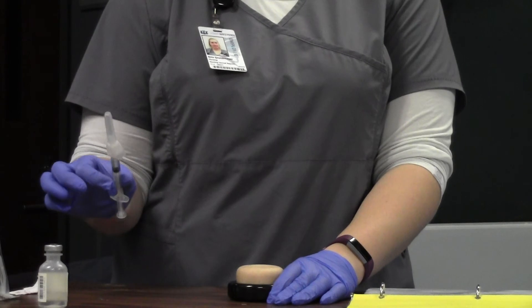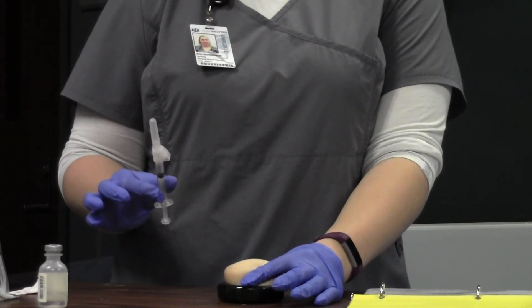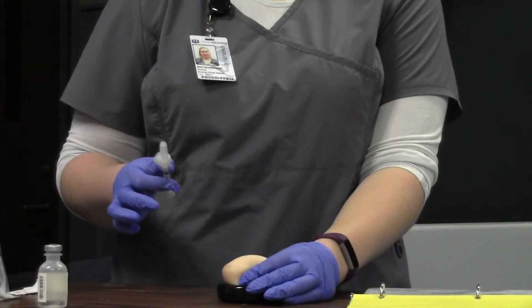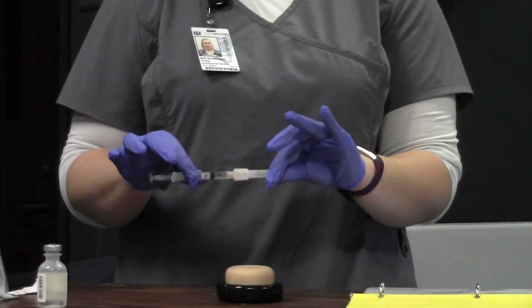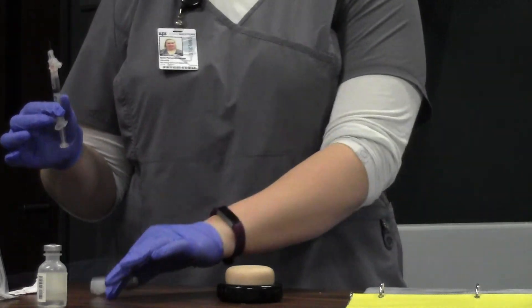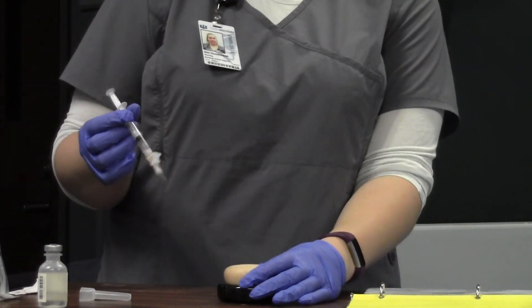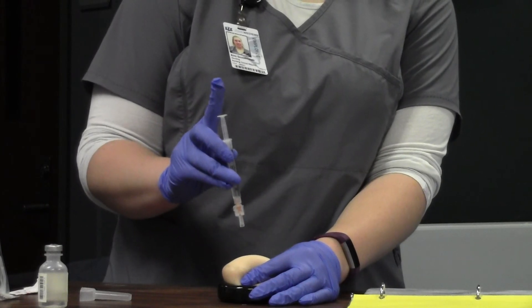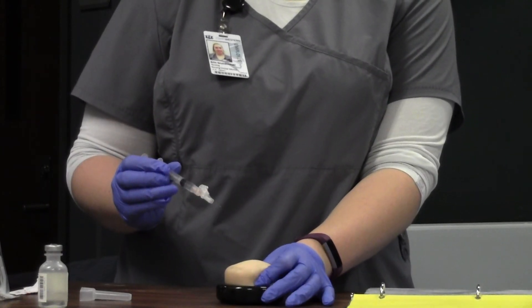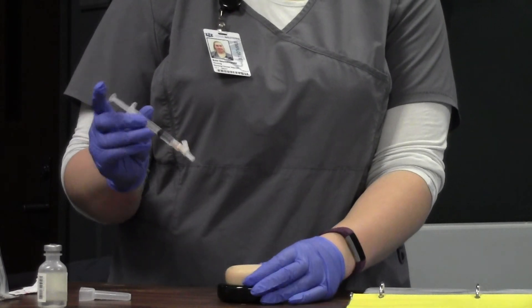I'm going to then make sure that I get a good pinch. If it is a smaller person, get as much fat tissue as possible. If it is a regular-sized person, go ahead and do a two-inch pinch, just like you would for your insulin. I'm going to go ahead and go in at a 90-degree angle, since I have a good pinch. If it's a smaller person, I can go in at a 45-degree angle, just depending on how much fat tissue I can get.